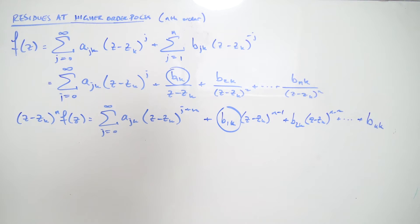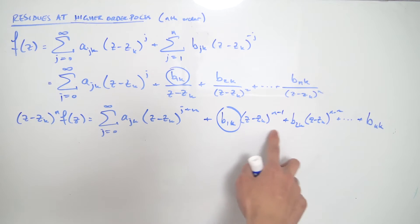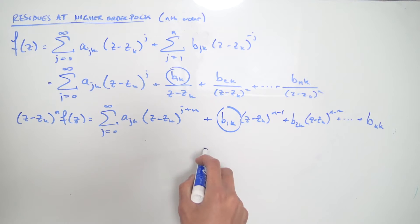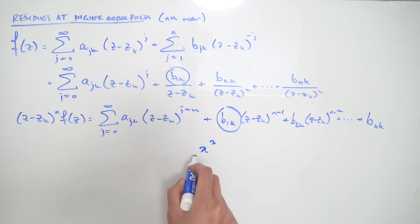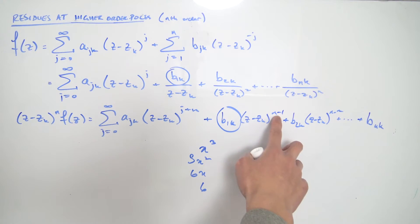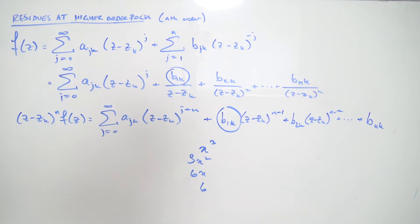Recall from Taylor series: to find the general formula for each Taylor coefficient, we differentiate multiple times to eliminate the power terms. That's exactly what we're going to do here — differentiate everything n minus 1 times. Why n minus 1? Because that's the power we have. For example, if we have x cubed and differentiate three times, we get 3x squared, then 6x, then 6 — eliminating the variable.